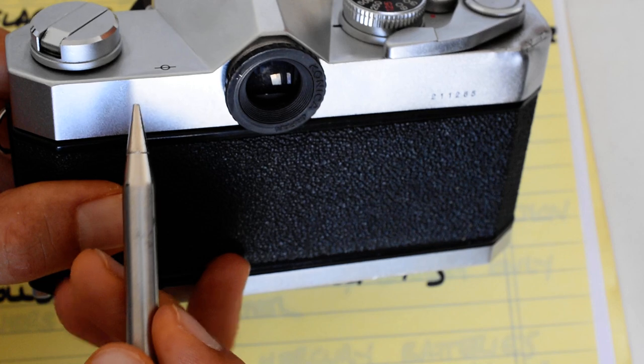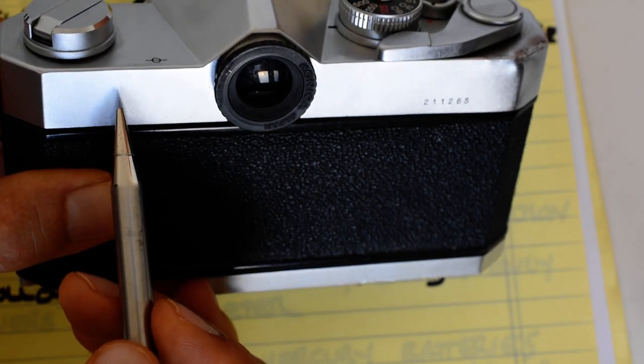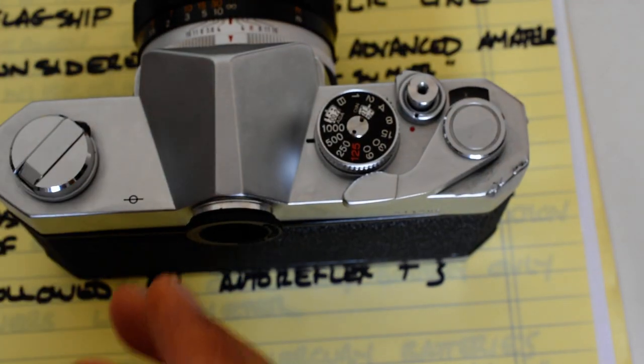On the T1, you've got an on-off switch right here in this area in the back of the camera, and there is no shutter lockout function.